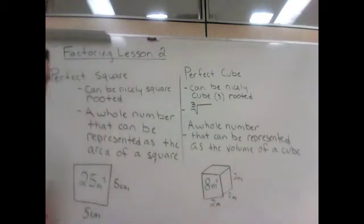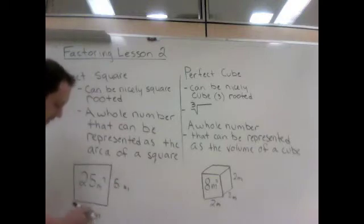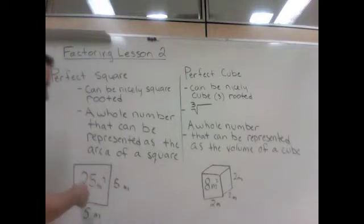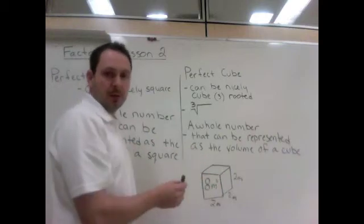Just in case anyone caught the mistake I made over here, I started with meters squared, and then I changed it to centimeters. These should of course be meters. 5 meters times 5 meters is 25 meters squared. A square, square root. A cube, cube root.